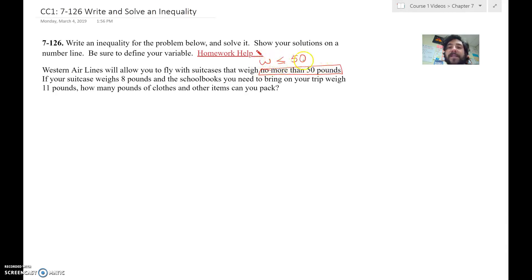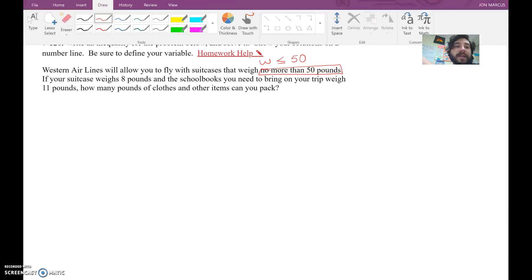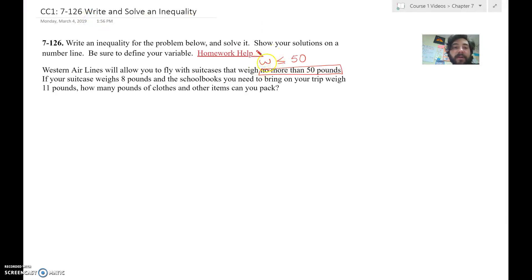So that our total weight of the suitcase must be less than or equal to 50 pounds. And let's now say what we know, that we know that the suitcase that we have, that our W here, the weight of our suitcase is going to be 8 pounds just for the suitcase. And then the school books that we need to bring, the school books are going to be 11 pounds. And the question is, how many pounds of clothes and other items can we pack?